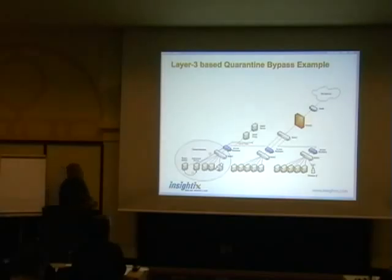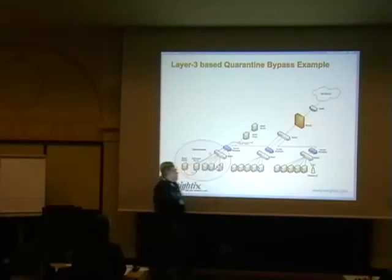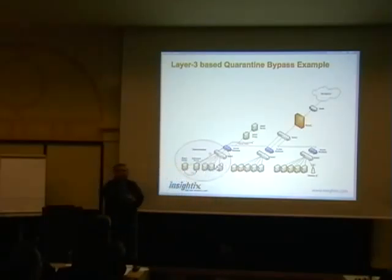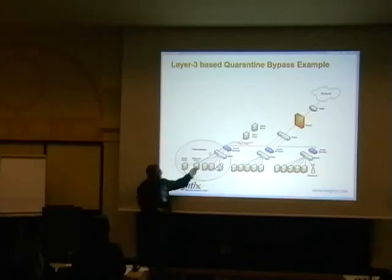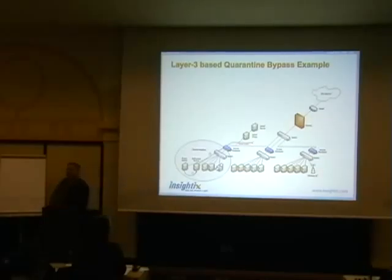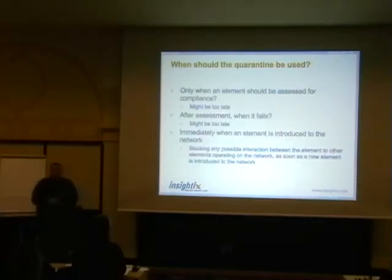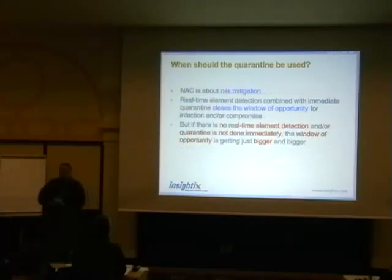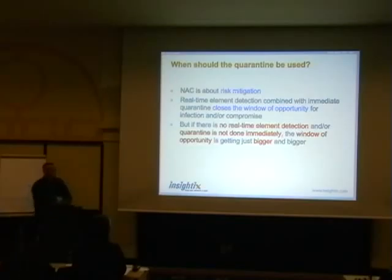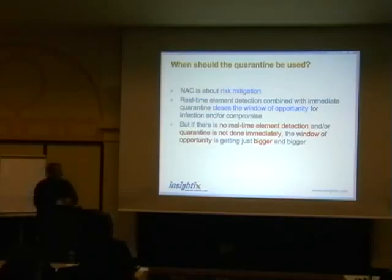A good example of why layer 3 based quarantine is bad: inline hardware doesn't do much if it just blocks access to other parts of the network. Basically, I can try to attack an allowed device and use it as an access proxy to other parts of the network. Also, when is quarantine enabled? Only when an element should be assessed? After the assessment? No — the answer is immediately. Because we don't know the device, we don't know what's running on it, we don't know if the user is authenticated or the device is authorized. So if you are assessing a NAC solution, look for this: the device needs to be quarantined immediately so that the risk it may pose is minimized.